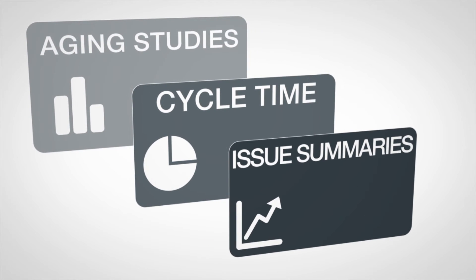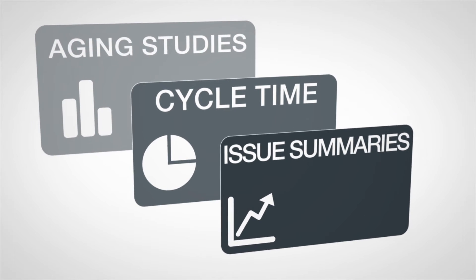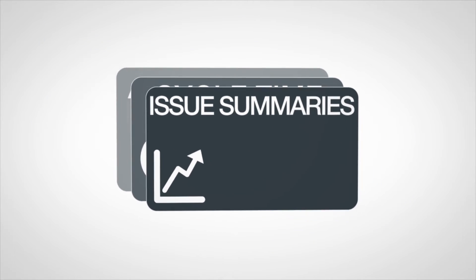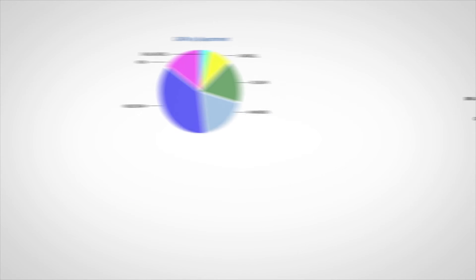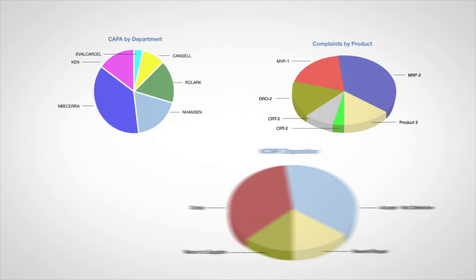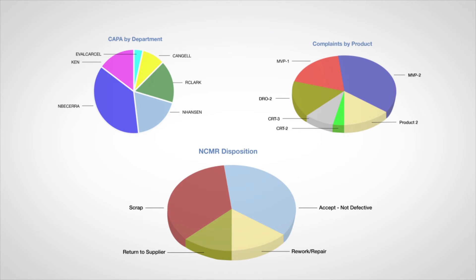The software can then produce a variety of reports like issue summaries, aging studies, overdue items, and cycle time. Data can be summarized in multiple levels so that CAPAs can be reported by product, department, root cause, and a host of other attributes.